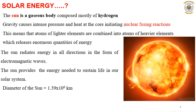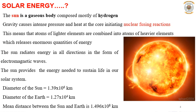The sun provides the energy needed to sustain life in our solar system. The diameter of the sun is nearly about 1.39 × 10⁶ km, whereas the diameter of the earth is 1.27 × 10⁴ km. The earth rotates around the sun, and the mean distance between the sun and earth is almost about 1.496 × 10⁸ km. These are parameters you may have studied in your earlier semesters or school days.